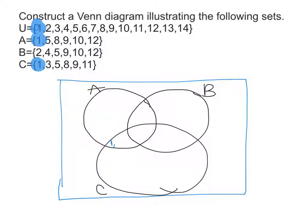Number two is in the universal set, but it is only in Set B — not in A and not in C. So we want it to be in Set B only. The number three is in the universal set and Set C, not in A, not in B — so we want it to be in C only. The number four is in the universal set and Set B, not in A, not in C — so we want it to go in B only.